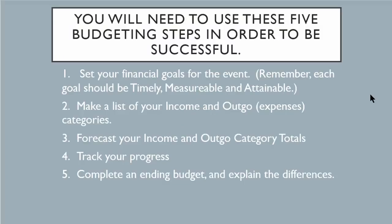A budget is a plan. You want to do a budget prior to your event, and you're going to predict your income and outgo — your income and your expenses — and keep track of everything. After the event is over, you're going to compare what you predicted to what actually happened, and that gives you what's called variance. There are five simple steps to follow. Number one: set your financial goals. Number two: make a list of all the line items. A line item is either an expense or an income item.